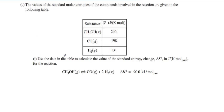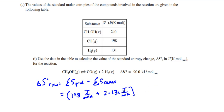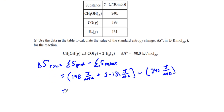For part C, we have our chemical reaction from before, and they give us the entropy S of each substance. I want the change in entropy ΔS for the reaction. I add up all the entropies of my products minus all the entropies of my reactants. Products: carbon monoxide is 198 J/mol·K, plus two moles of H2 times 131 J/mol·K. Reactants: CH3OH is 240 J/mol·K. The ΔS for the reaction ends up being 217 J/mol·K.